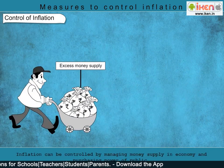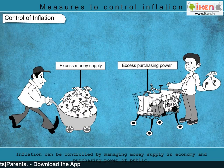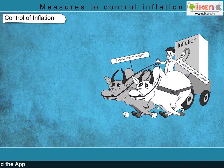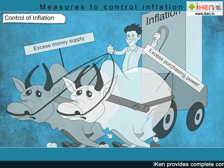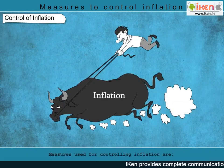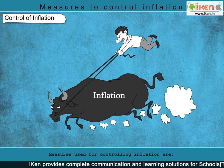Basic causes of inflation are excess money supply in the economy and excess purchasing power in the hands of the public. If both these factors are brought under control, then it is much easier to bring inflation under control. There are several ways through which inflation could be brought under control.